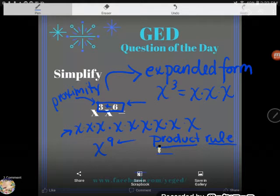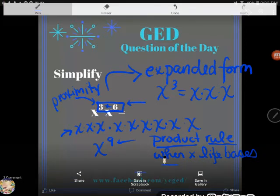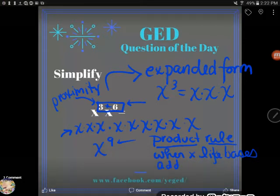So the product rule says that when multiplying like bases—so these are like bases, they both had a base of x—you just add the exponents.